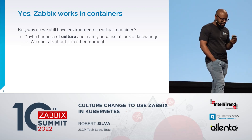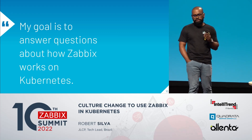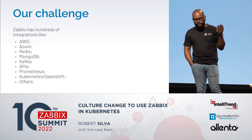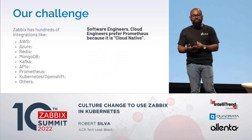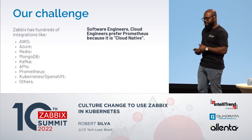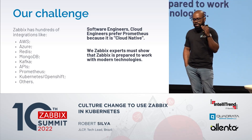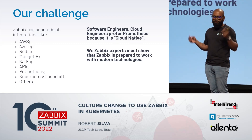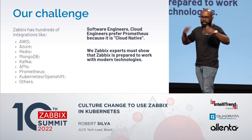Today I won't talk about the general benefits of Kubernetes. My goal is to answer questions about Zabbix working in Kubernetes. Zabbix has hundreds of integrations like AWS, Azure, Redis, and MongoDB. But software and cloud engineers prefer Prometheus because it's cloud native. I think Zabbix experts must show that Zabbix is prepared to work with modern technologies — not just simple solutions for infrastructure, servers, virtual machines, and databases. We can use Zabbix to monitor modern applications.